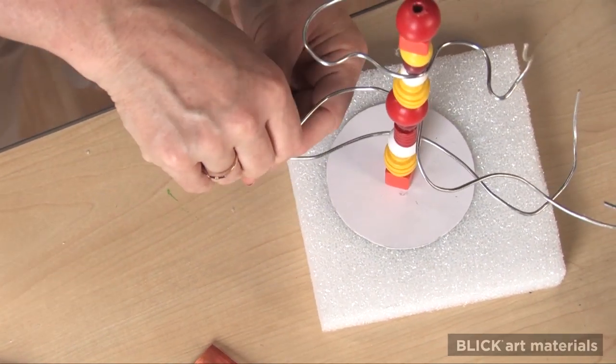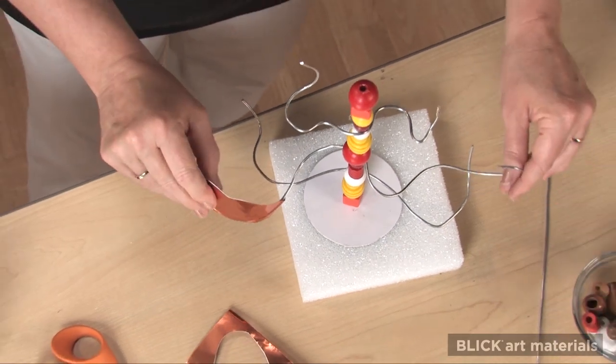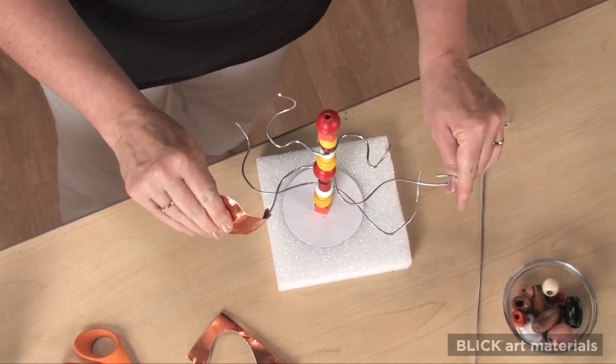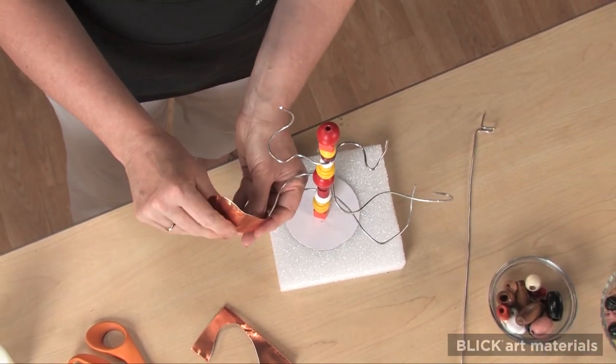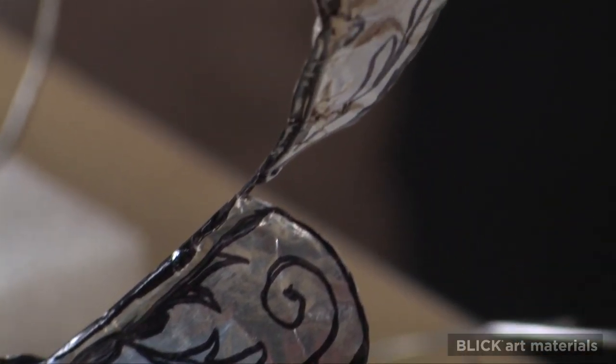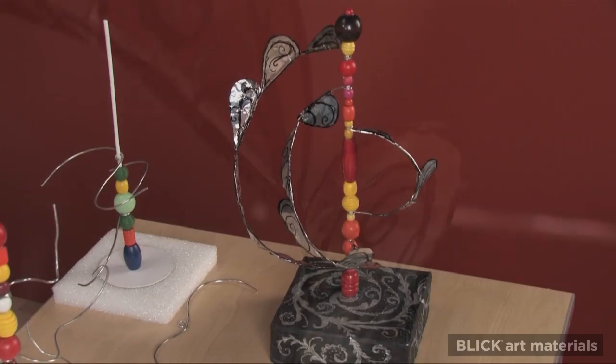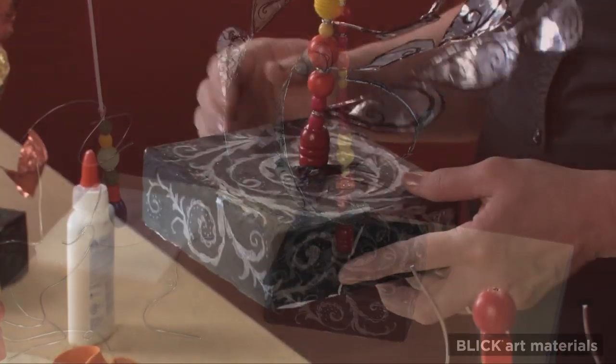Once everything is dry, adjust all the wire blades and all of the sails so that they don't run into each other and they can catch the air currents. The sculpture may be finished by decorating the sails with marker or covering the base with paper acrylic paint.